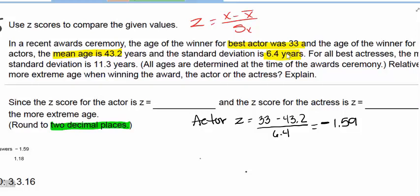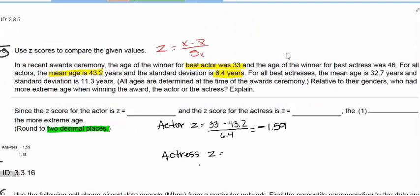Now let's do the actress. The actress was 46. The mean age for the actress is 32.7 and the standard deviation is 11.3. Plug those in and calculate a z-score for the actress.